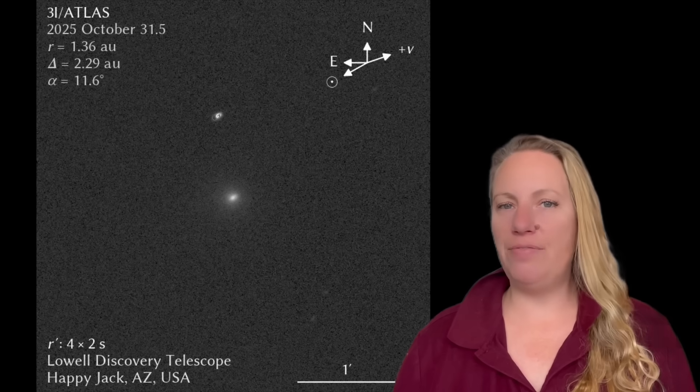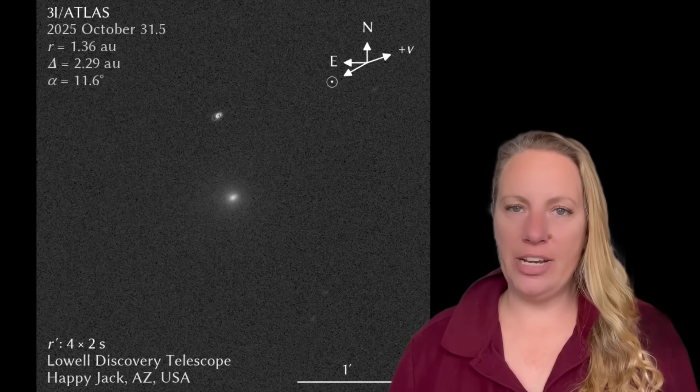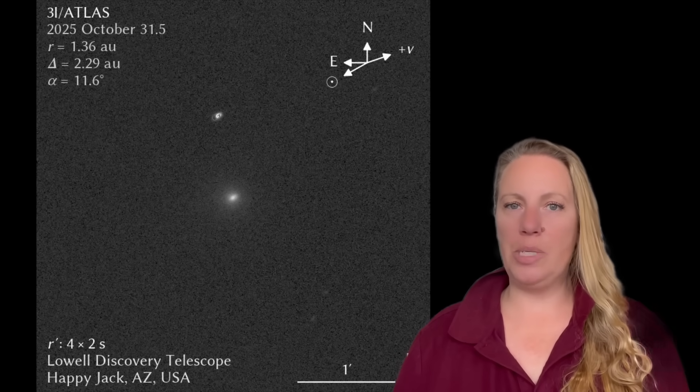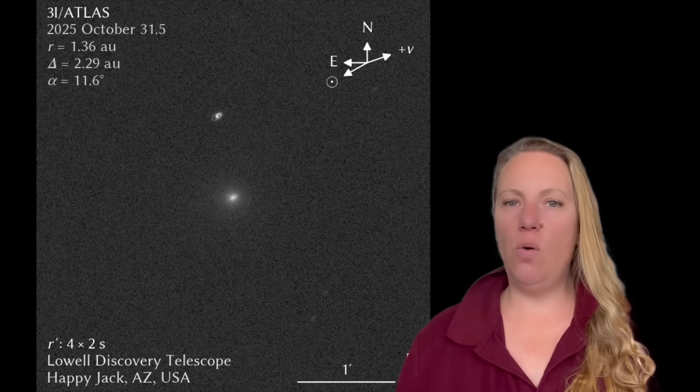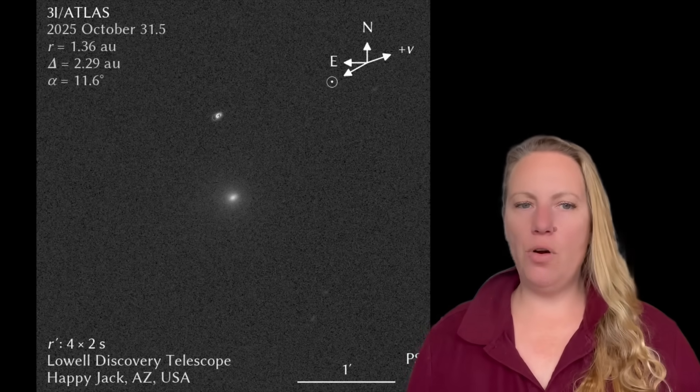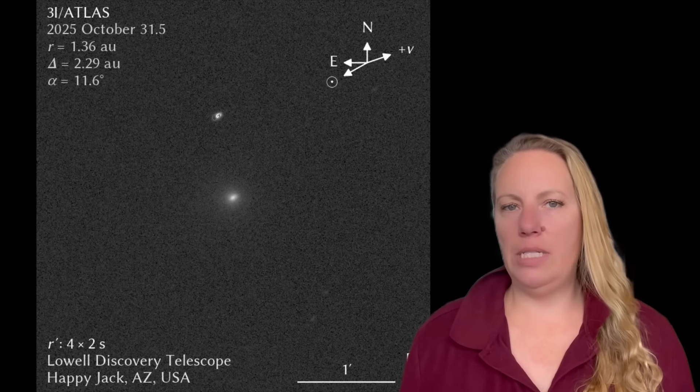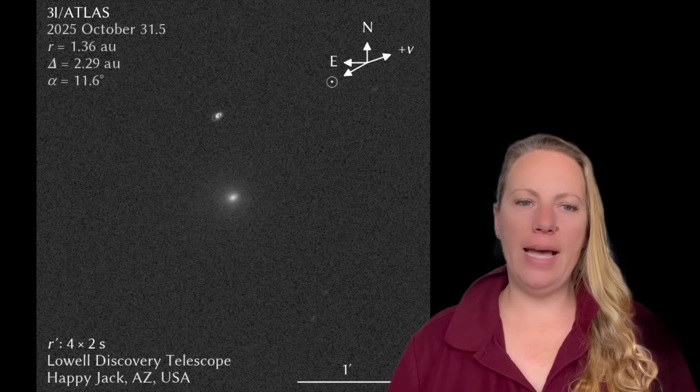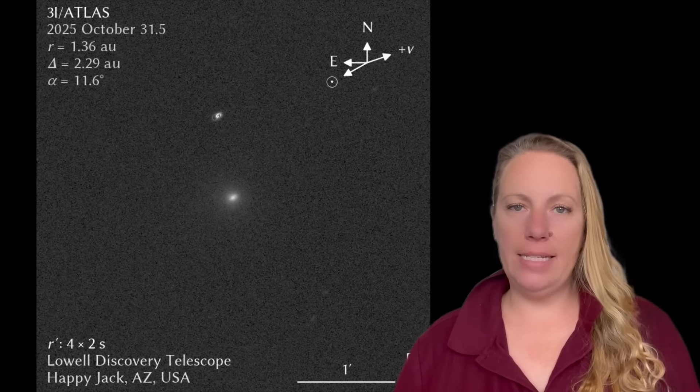I mean, now we have the new images here that just came out basically two days ago, right? So what's the problem? So of course, then, what could this mean? What could 3i Atlas be? Are they hiding something?